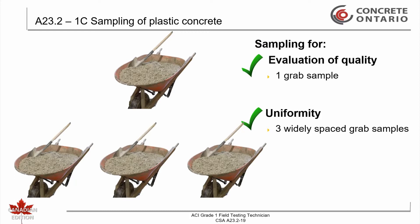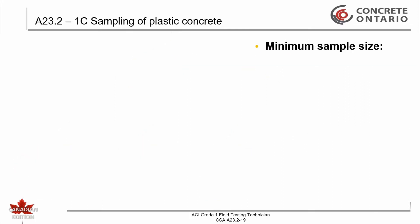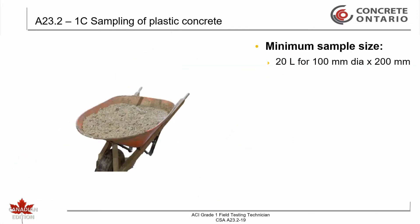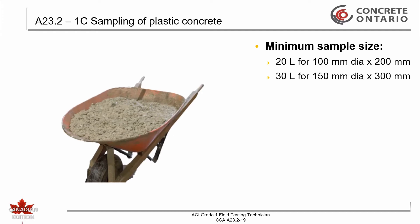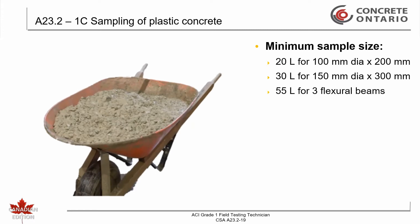Do not allow the mixer to turn in the mixing direction between samples, and do not add any water once sampling has begun. The minimum sample size required is 20 liters when using 100 by 200 millimeter cylinders, 30 liters when using 150 by 300 millimeter cylinders, and 55 liters when three flexural beams are to be made. Smaller samples may be used when only routine air content and slump tests are being conducted.